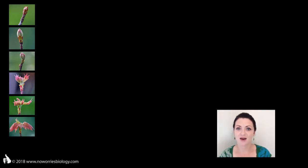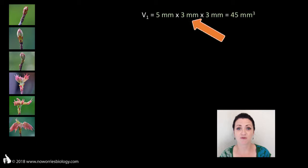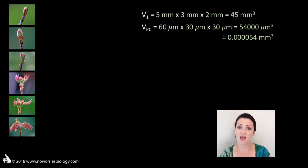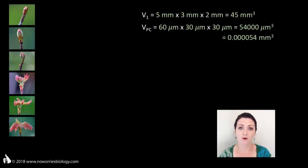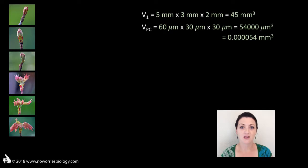So what I did is I started my investigation by taking some measurements. First I measured the dimensions of one of the leaf buds on my maple tree: 5 mm by 3 mm by 3 mm. In order to calculate its volume: 45 mm³. Then I calculated the average volume of a plant cell — 60 µm by 30 µm by 30 µm equals 54,000 µm³ — to get an idea how many plant cells might be contained within such a leaf bud. This would mean that this leaf bud might contain 830,000 cells.